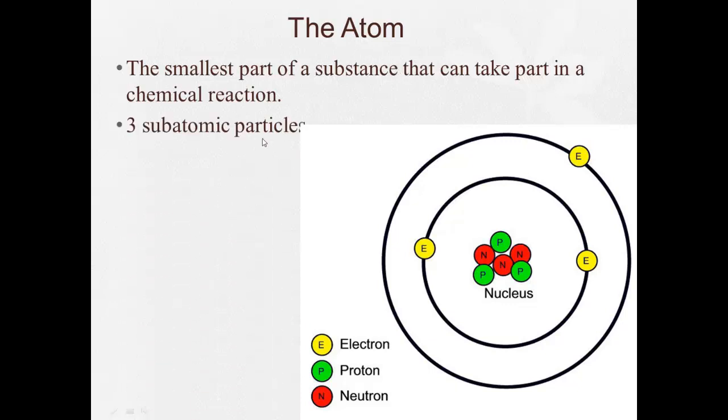Very important, we have to know the three subatomic particles. They are the proton, the neutron, and the electron. If we look at the picture here, we can see both the proton and the neutrons are in the nucleus. They'll be referred to as nucleons sometimes. They're both in the nucleus, and the electrons move around the nucleus.